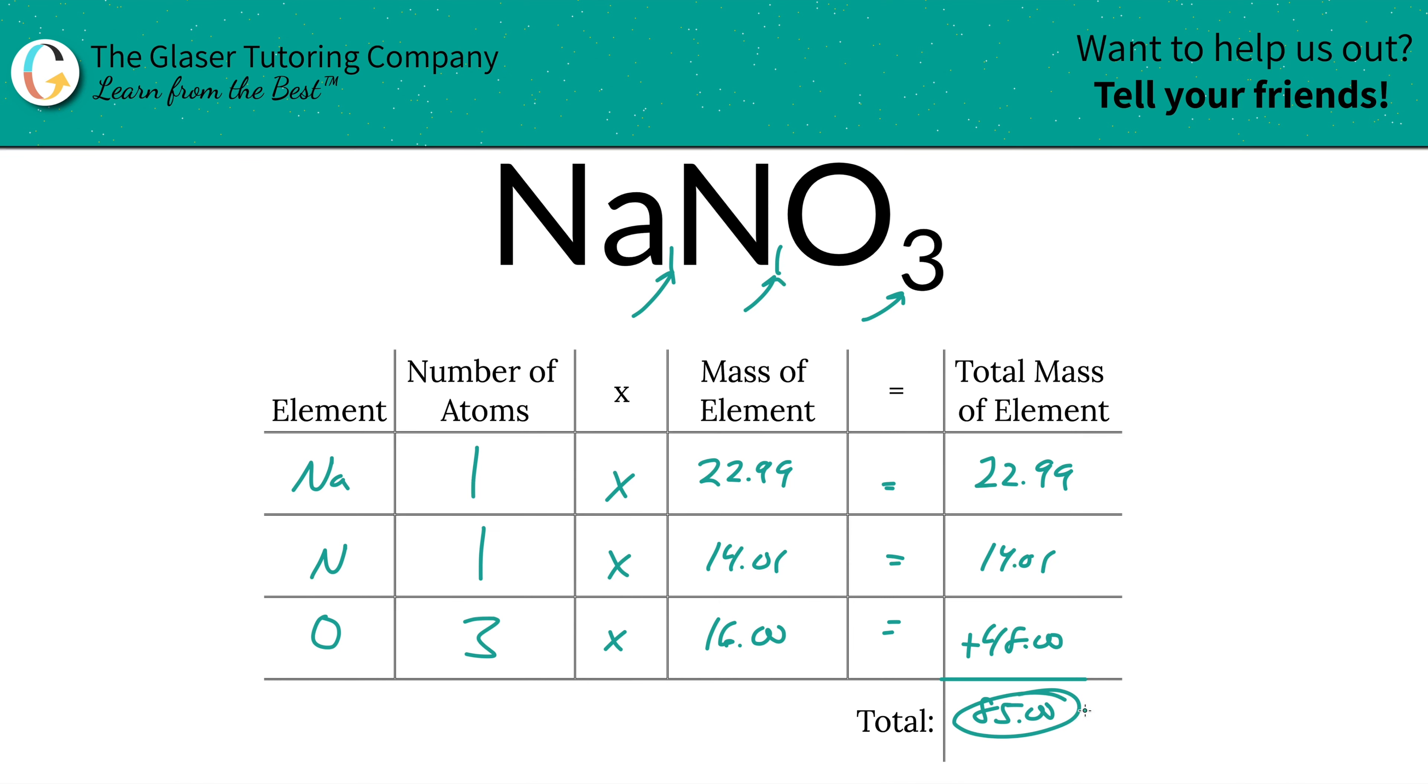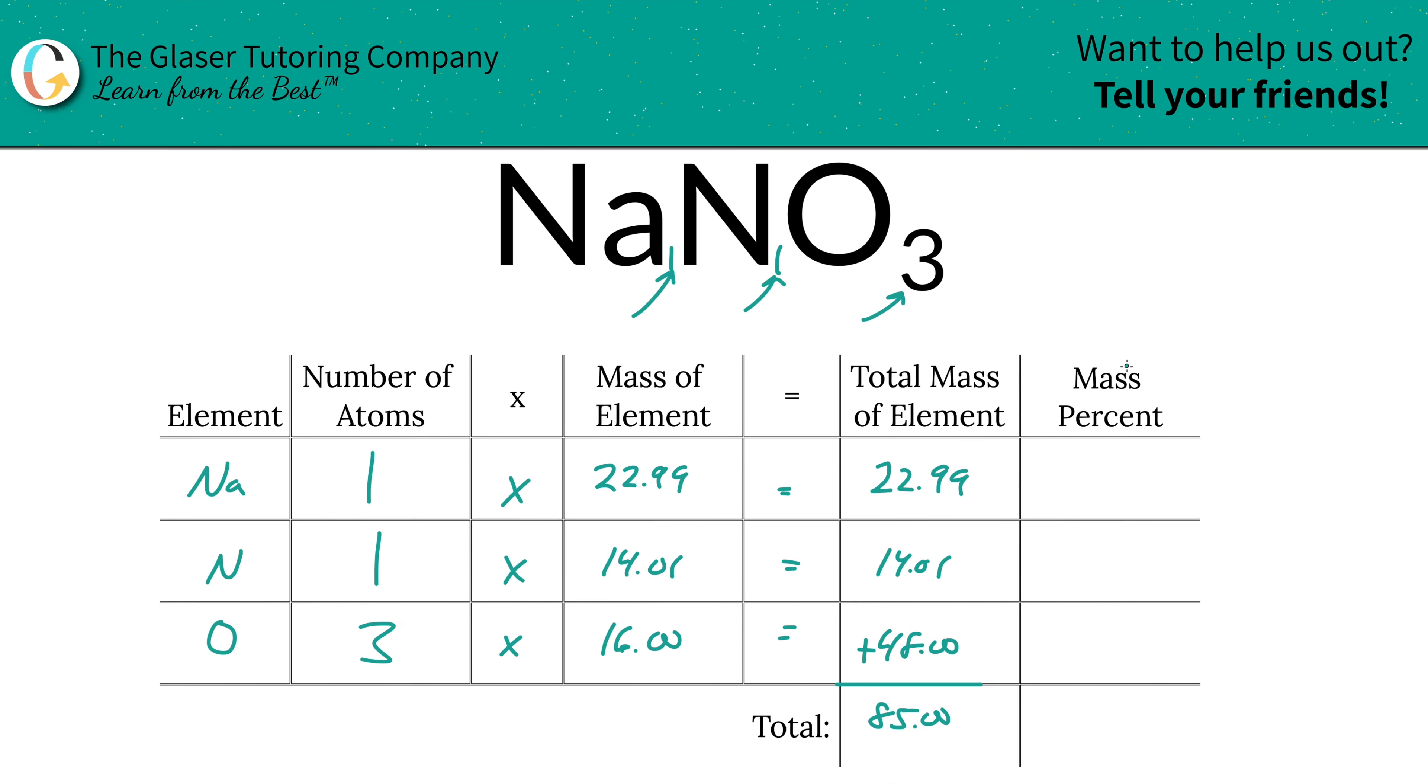And there you have it. That's the total mass of the entire compound. That was the first step of the process. Now I'm going to add a column to the table to find those percents. Watch how fast this is.